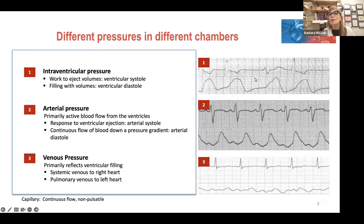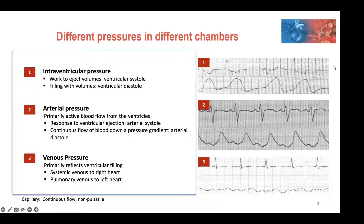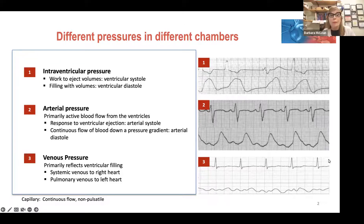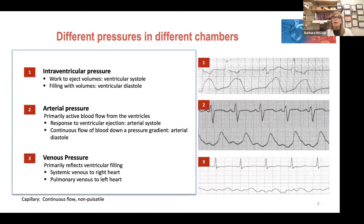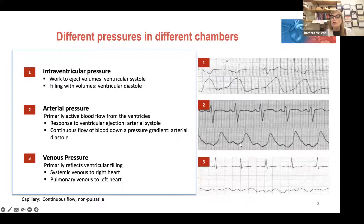Number two is arterial pressure, something we're all familiar with. You've had systemic arterial lines and sometimes pulmonary arterial lines. Arterial pressure consists of an upstroke to systole, a fall down to the closure of the valve separating the ventricle from the artery. For the left ventricle that's the aortic valve; for the right ventricle, the pulmonary valve — that inscribes what we call the dicrotic notch. So you have systole, dicrotic notch, diastole.